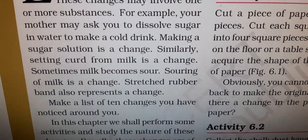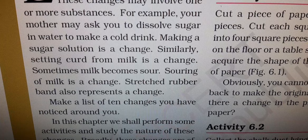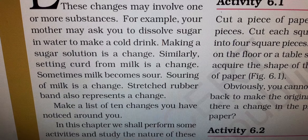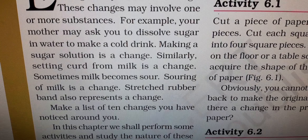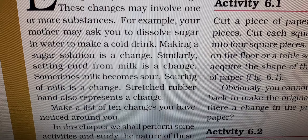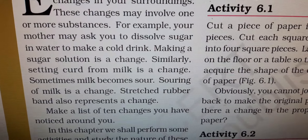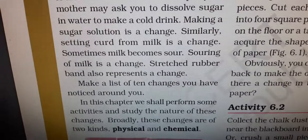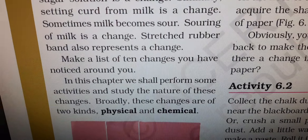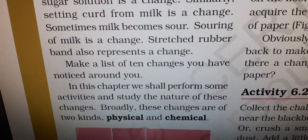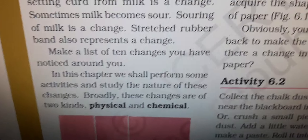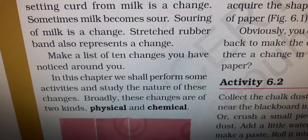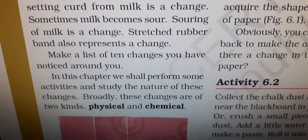Make a list of 10 changes you have noticed around you — in your copy, list 10 changes after watching the video. In this chapter we will be learning about two types of changes: physical changes and chemical changes. Earlier we read about reversible, irreversible, desirable, and undesirable changes; now in this chapter we will read about physical and chemical changes.